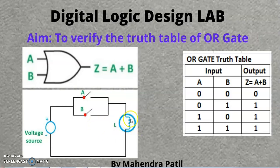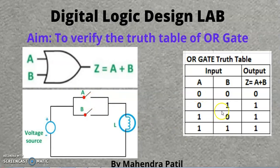We will apply these input possibilities. For two variables, there are four possibilities: 0 0, 0 1, 1 0, and 1 1. Here, 0 means the switch is open and 1 means the switch is closed.